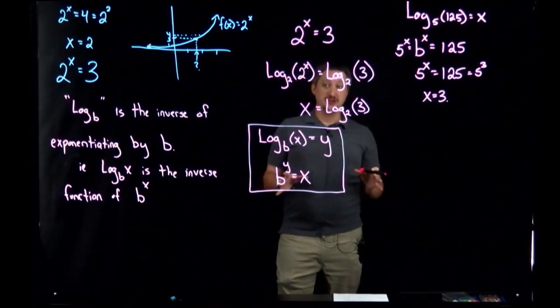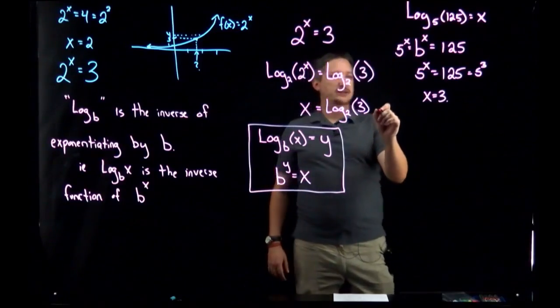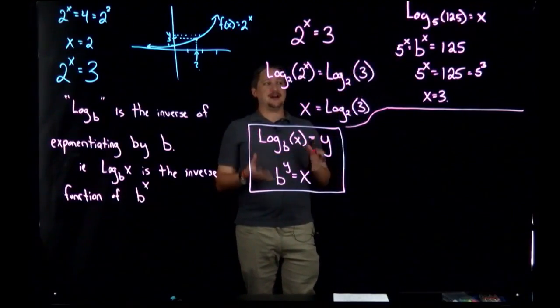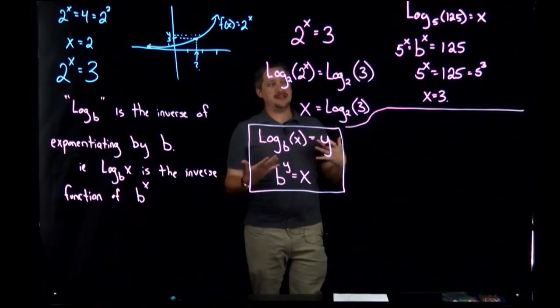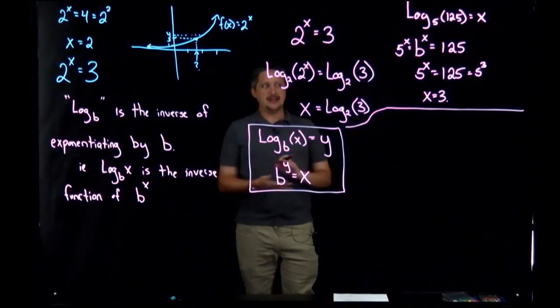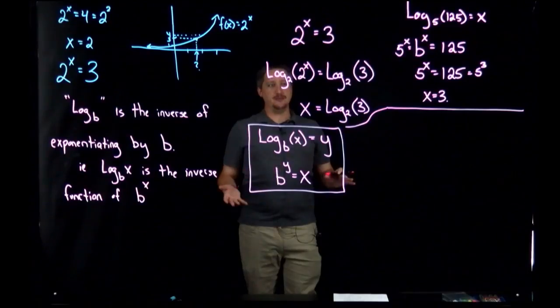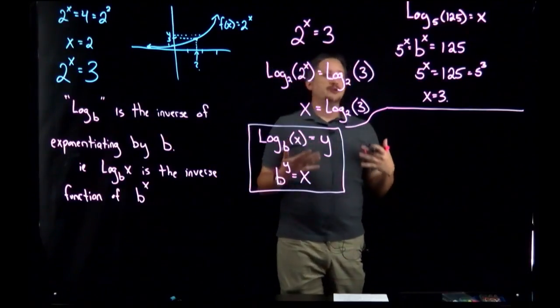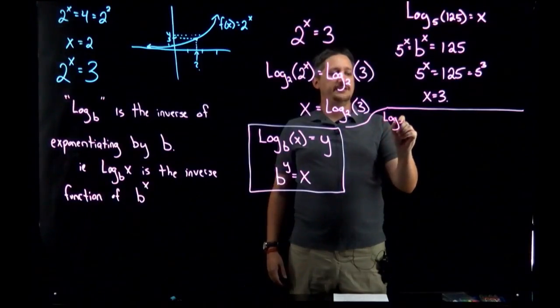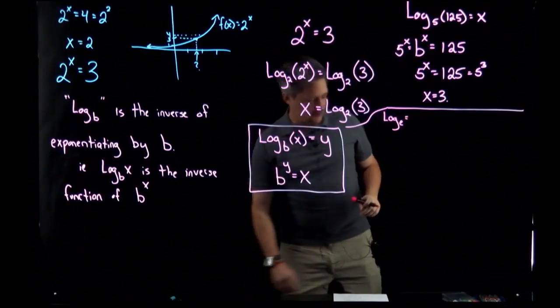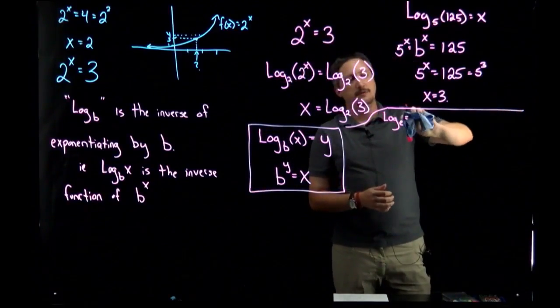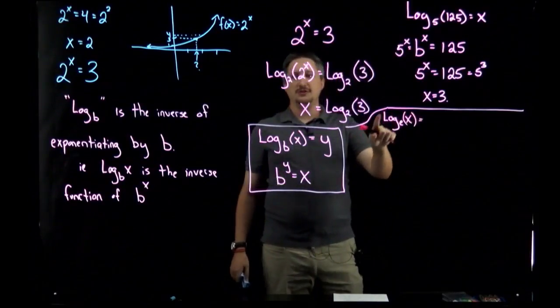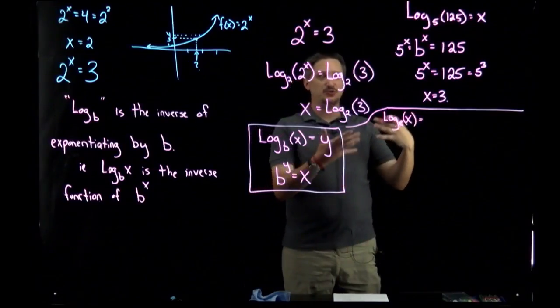Now, there is often some confusion about notation, so I want to point out one extra piece. There is a specific base that is incredibly helpful in calculus - it comes up so often in so many applications and disciplines that people wanted a shorthand. So there is a shorthand way of writing log base e. Log base e of x is often referred to as the natural log.